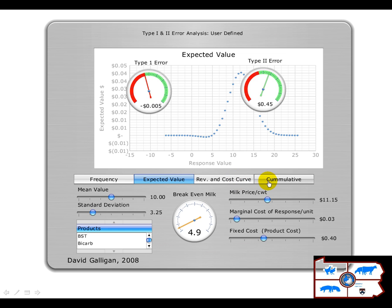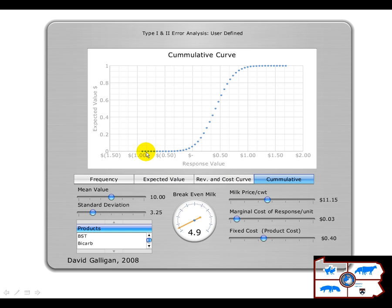We can also look at this on a cumulative basis. This is the cumulative curve. We can see that when I put the curve right over here, there's about a 5% chance that the response is below break-even, so I have a 5% risk. These cumulative curves are what we use to evaluate stochastically when you have multiple products. It's a fun little tool.